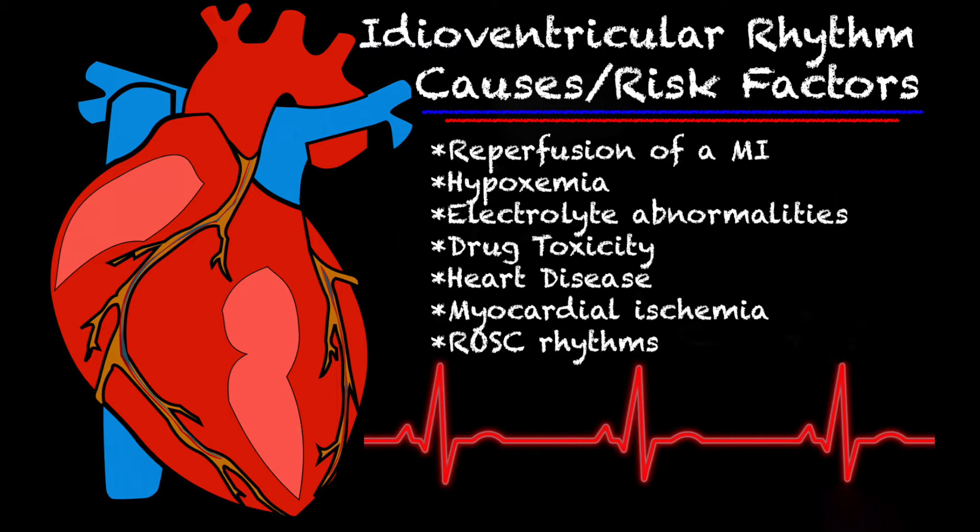Some of the causes and risk factors of an idioventricular rhythm can include the reperfusion of an acute MI, hypoxemia, electrolyte imbalances, heart disease — this can be congenital heart disease, cardiomyopathy, or something like that — and myocardial ischemia. So if you're working a cardiac arrest and you achieve ROSC, you could see an idioventricular rhythm.